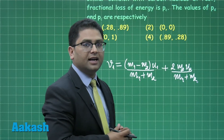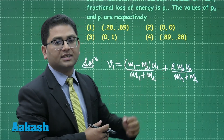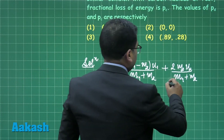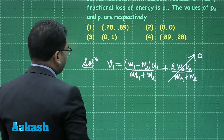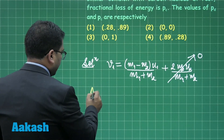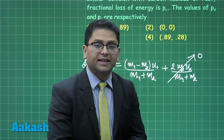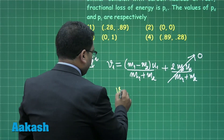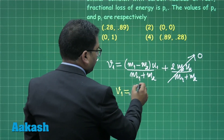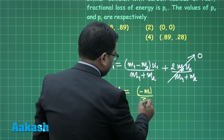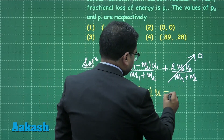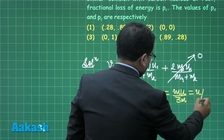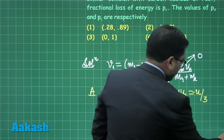Since the target — deuterium in case A and carbon nucleus in case B — is at rest in both situations, the u2 term vanishes. For case A, neutron (mass m) strikes deuterium (mass 2m), so v1 = (m - 2m) / (m + 2m) · u = -m / 3m · u = -u/3. The negative sign must not be missed.